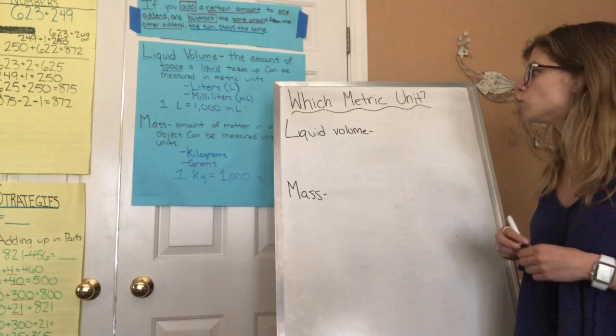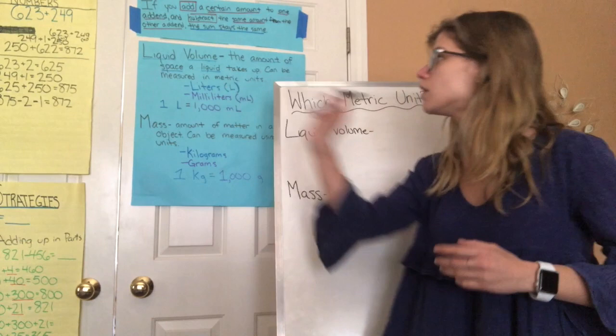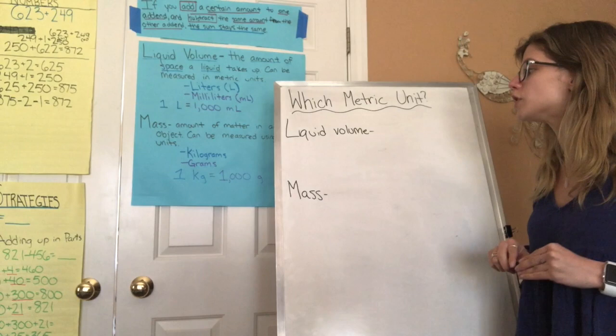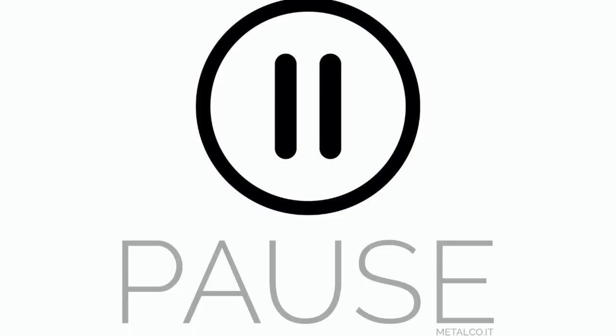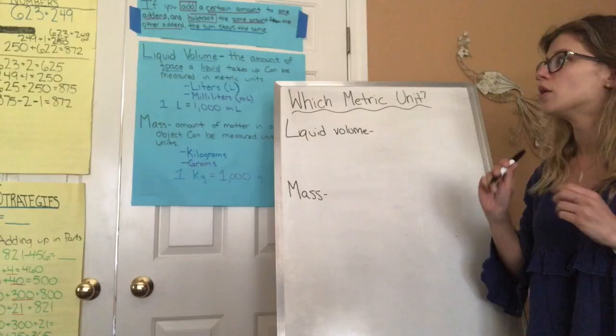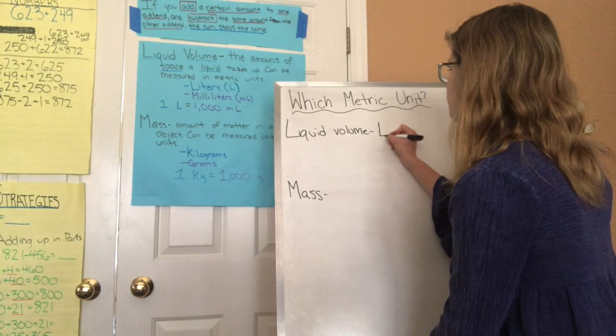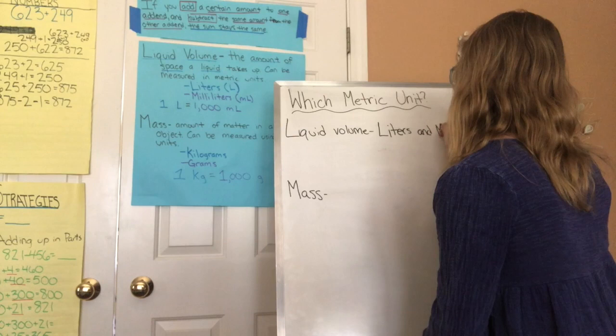Now we're going to change pace and start thinking about metric units. Take a look at this poster and think about what metric unit would be used to measure liquid volume. What two metric units measure liquid volume? Pause and think about it. The two metric units that we use to measure liquid volume are liters and milliliters.